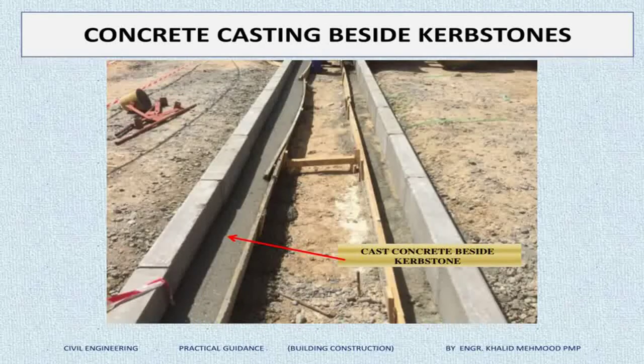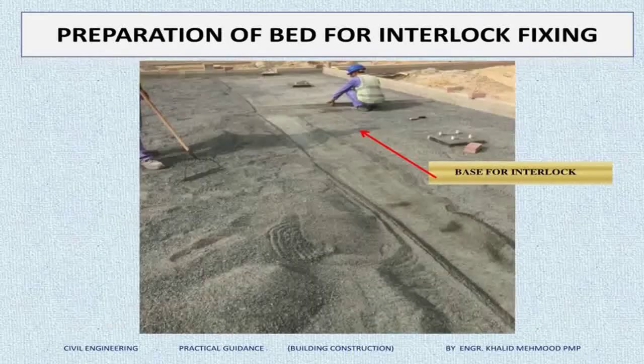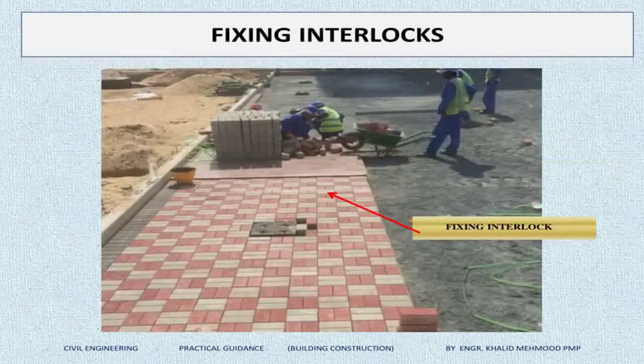After doing the grouting, you can see here we are casting in-situ concrete behind the curbstone, as explained in the section detail. After casting the concrete, we start backfilling with proper compaction before we can begin fixing the interlocks.